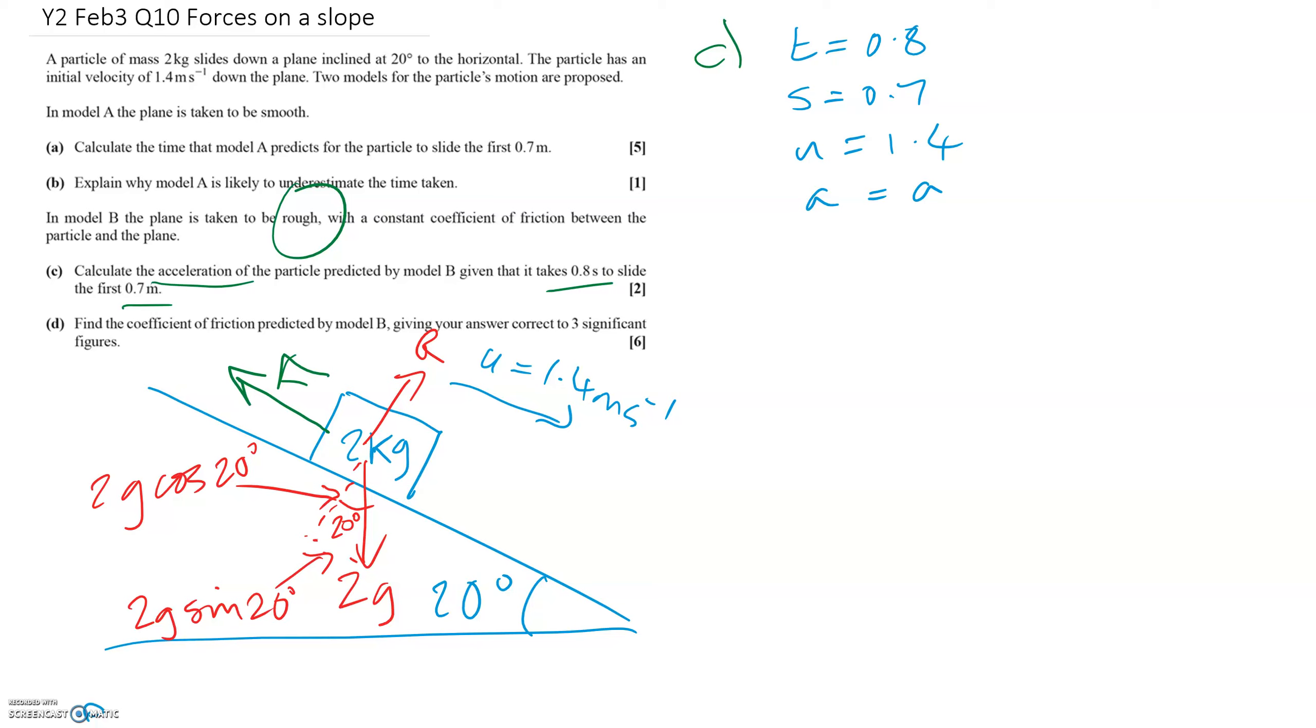So I think we're going to need to use S equals UT plus half A T squared again for this one. We put in all our values, we've got 0.7 equals 1.4 times the time, plus half the acceleration, times 0.8 squared. And so simplifying that, 0.7 equals 1.12, sorry that's a plus over here, plus 0.32A.